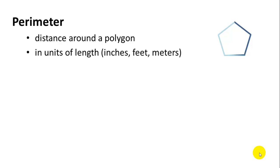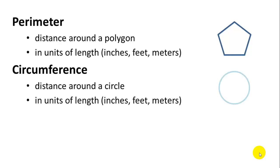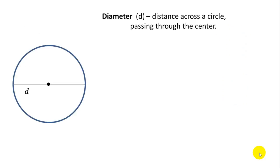For circles, however, we talk about circumference. Circumference is the distance around a circle, and it's also measured in units of length — inches, feet, meters. But since there are no straight edges, we have to figure out how to calculate the distance around the circle, the circumference. So let's look at a circle.